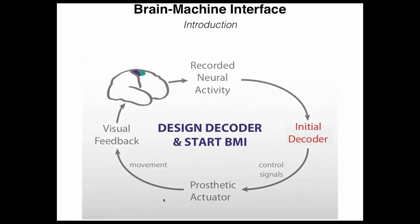Brain-machine interfaces, or BMIs, are an emerging class of medical system that aims to help people with neurological injury and disease, such as amyotrophic lateral sclerosis or upper spinal cord injury. These systems work by recording electrical neural activity from various parts of the brain, for example the motor cortices, and translating these neural signals into control signals by virtue of a mathematical decoding algorithm, which we refer to here as the initial decoder.